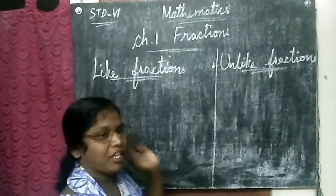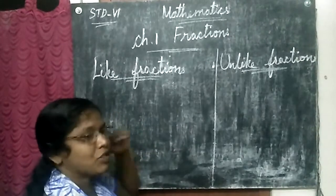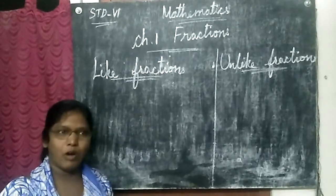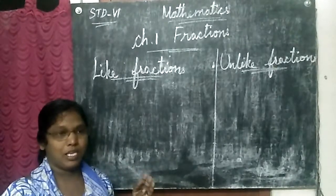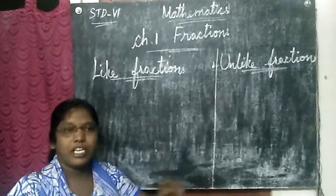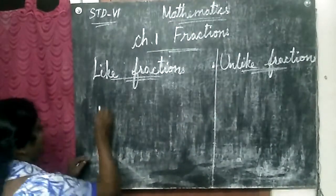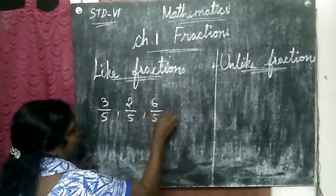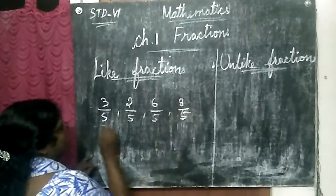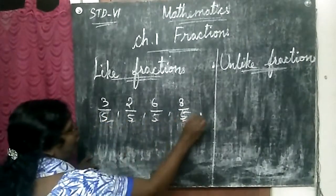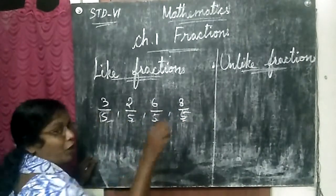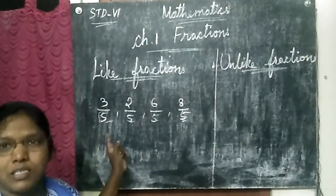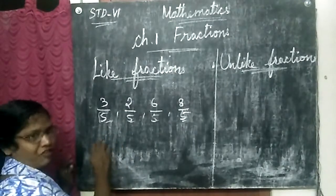Next I am going to teach you about like fractions. Like fractions means the denominators will be same — all the denominators will be same. Unlike fractions means the denominators will not be same. For example: three by five, two by five, six by five, eight by five — the denominators are all five. Numerator may differ, but the denominators are same here. It is called like fraction.